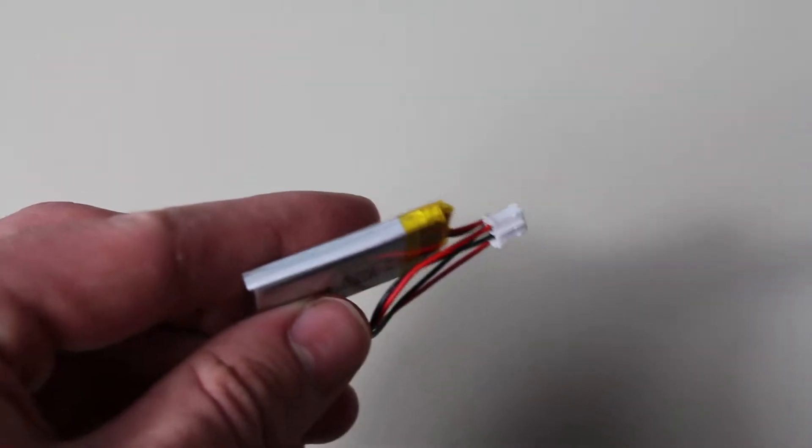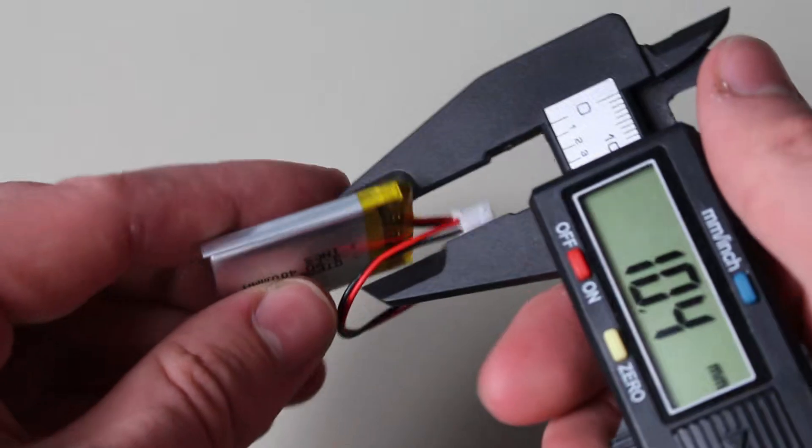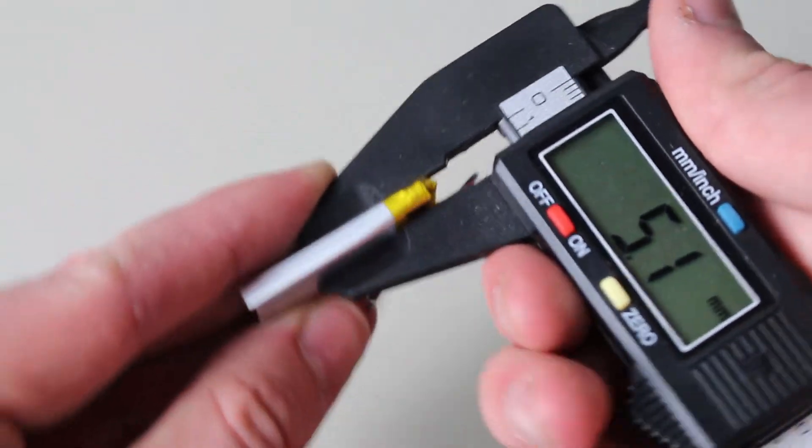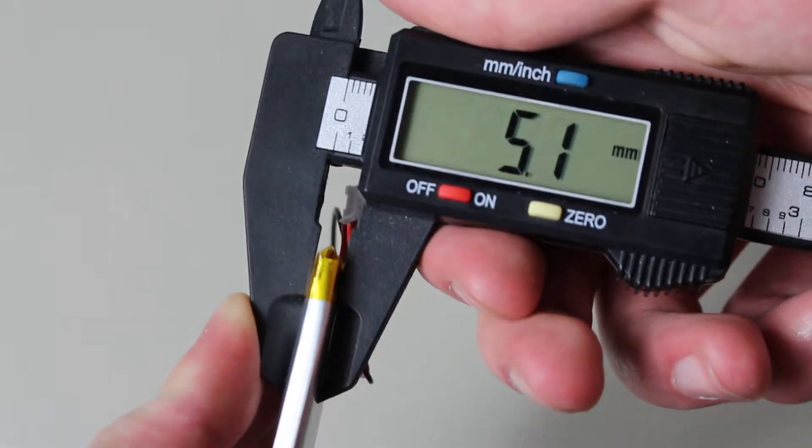Anyways, based on the internal chemistry, LiPo batteries are able to be produced in very thin and compact packages, although they can be in large sizes as well. The best part about this is that even though these batteries are very lightweight and compact, they still have impressive capacity and power output.